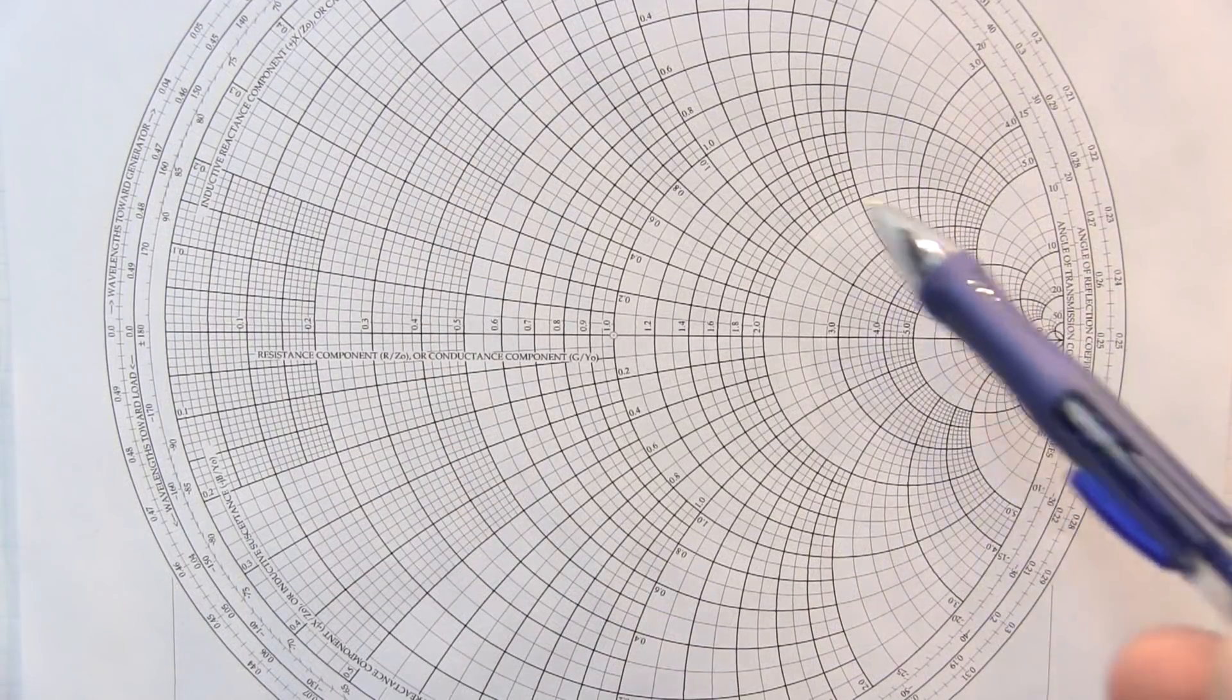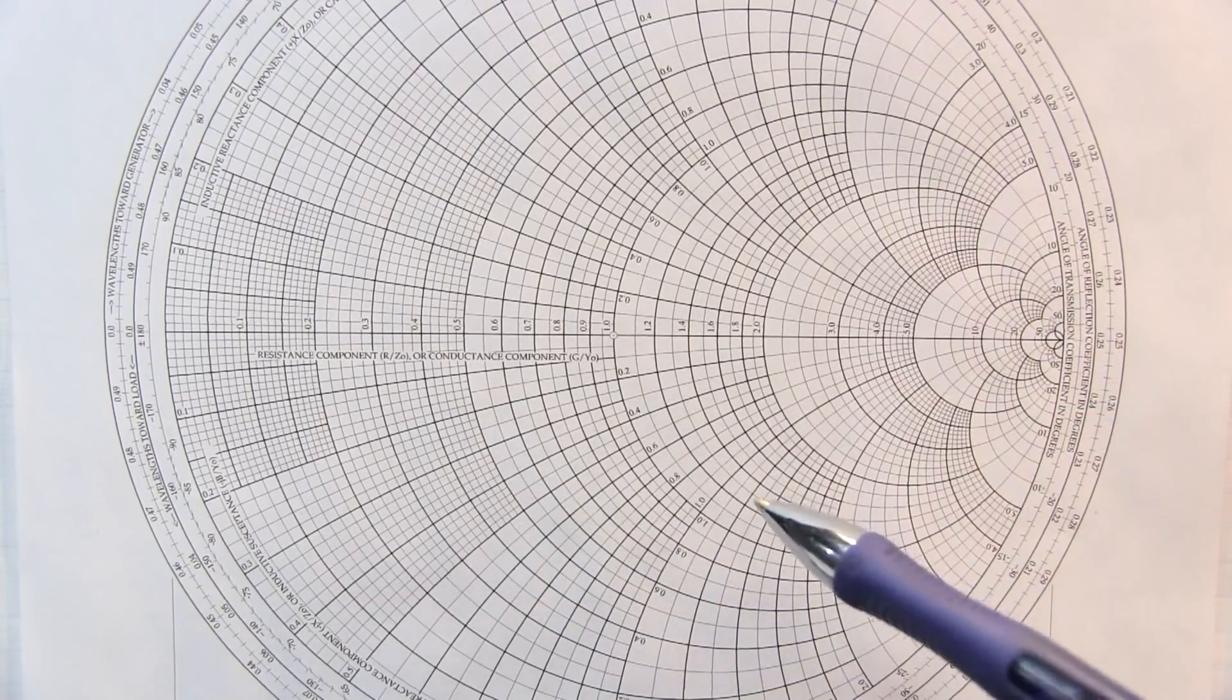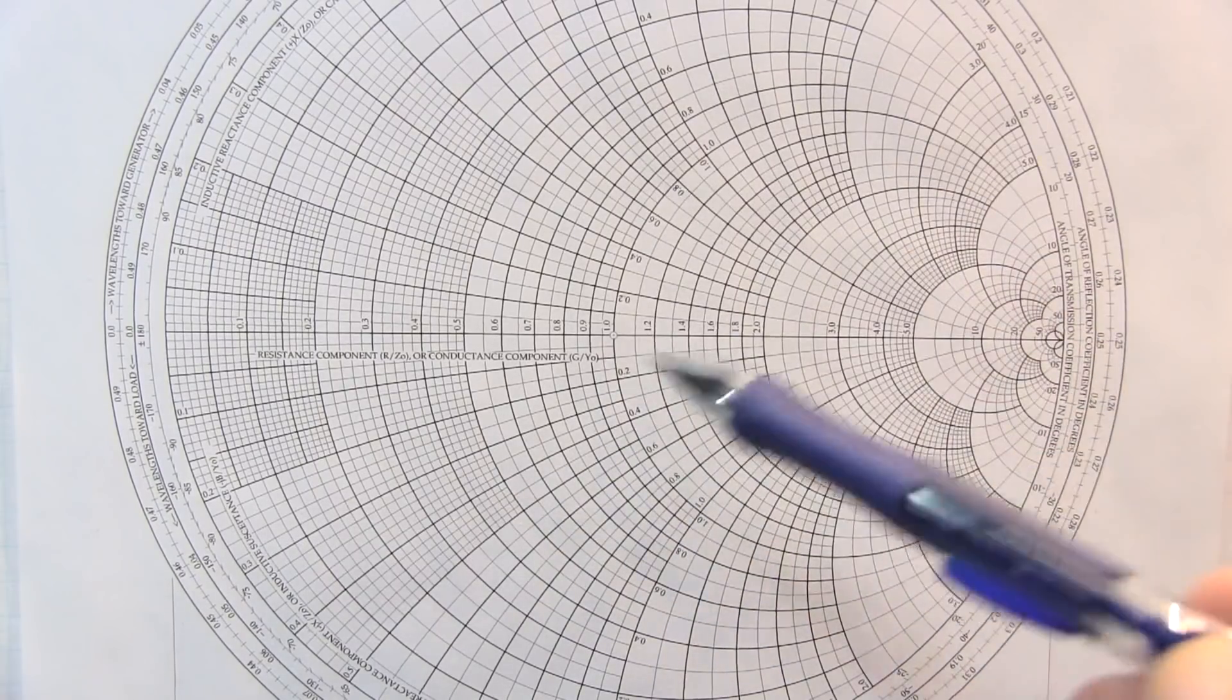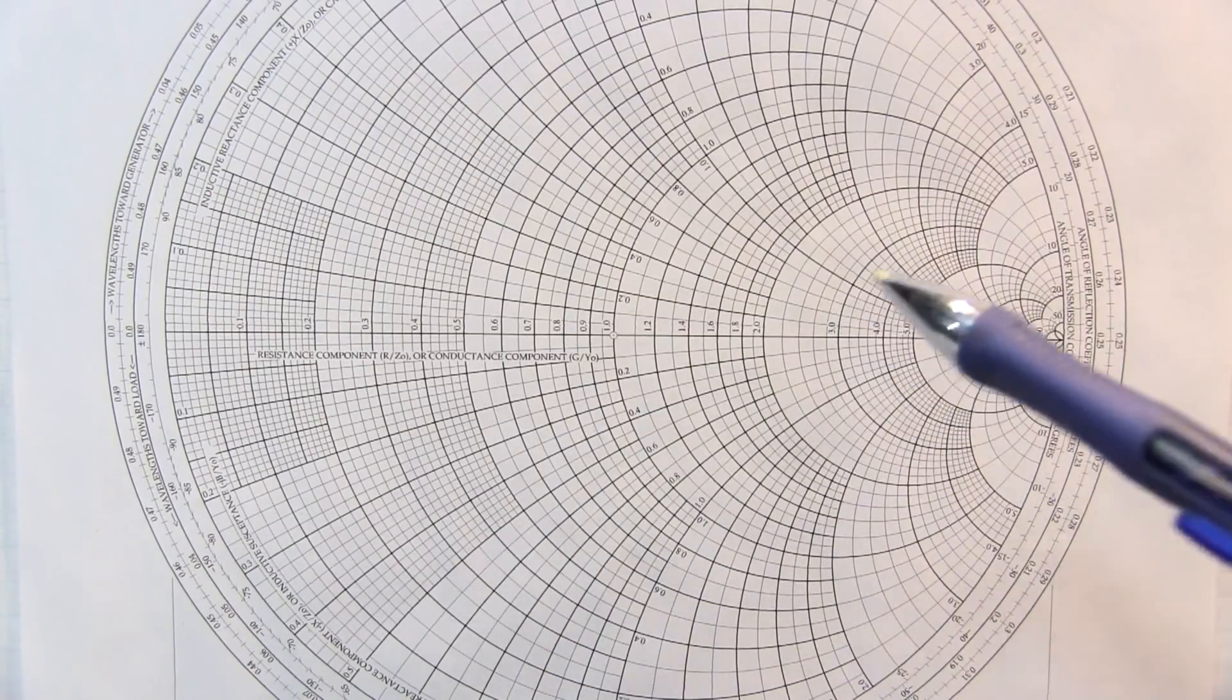The Smith chart is comprised of a series of concentric orthogonal circles that represent the real part and the reactive part of a complex impedance.